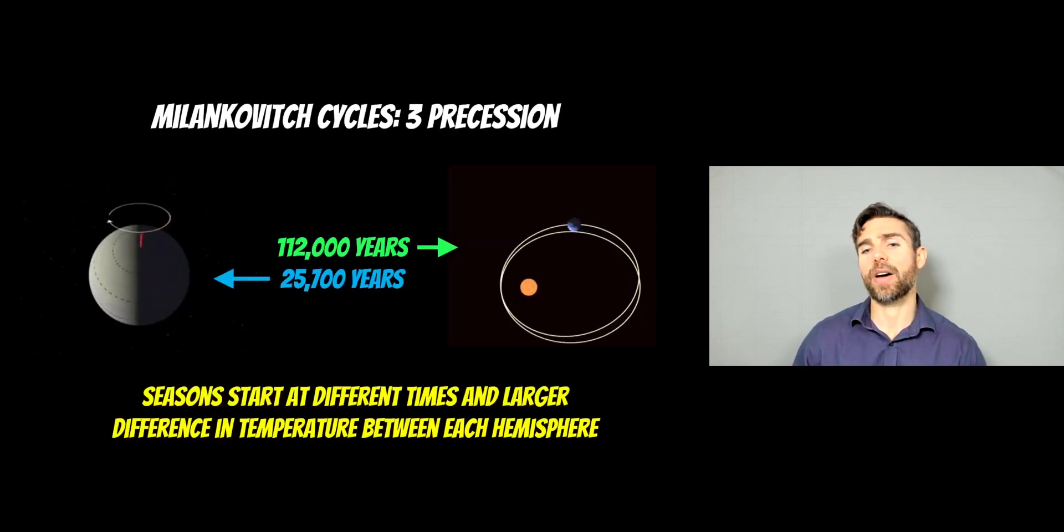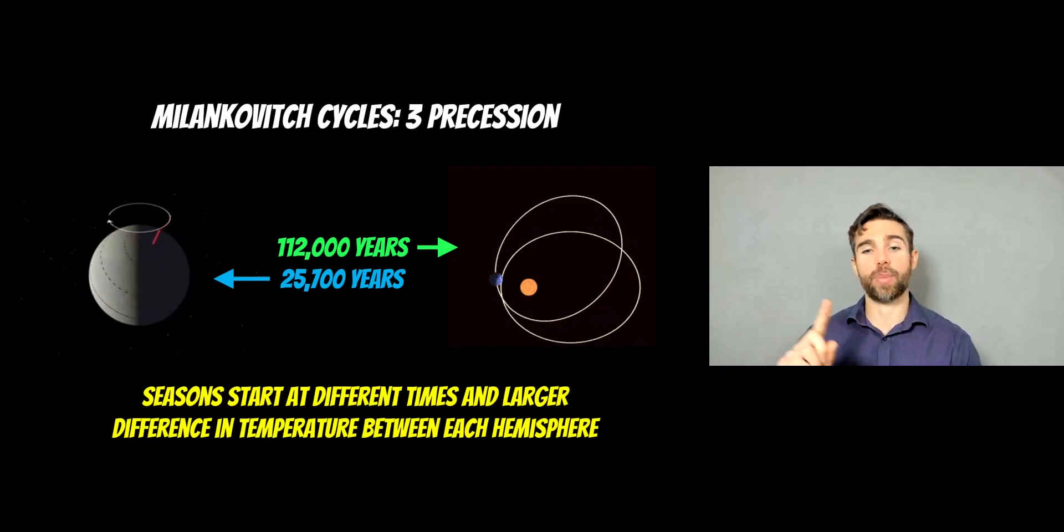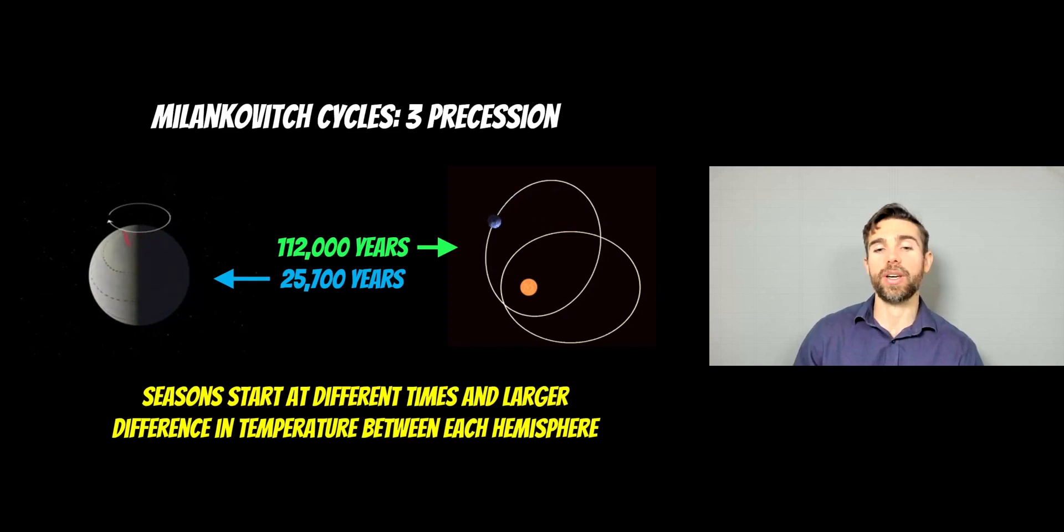You then have precession. And there's two elements to that. The first one on the left here is the actual rotation axis of the Earth, or the tilt, precesses about and kind of makes a circle. So that precesses about. And that happens just under 26,000 years, it cycles. And then on the right, you've got the precession of the orbit itself. So the Earth's orbit is not perfectly circular. There is some ellipticalness to it. And that orbit itself actually precesses about the Sun as well. And that happens about 112,000 years that occurs.